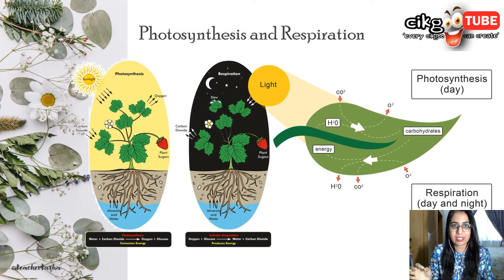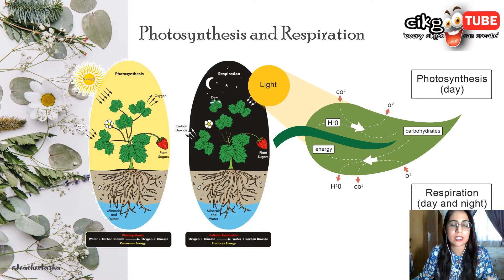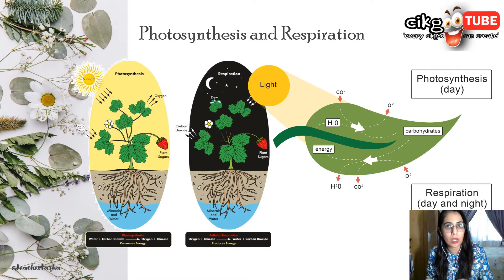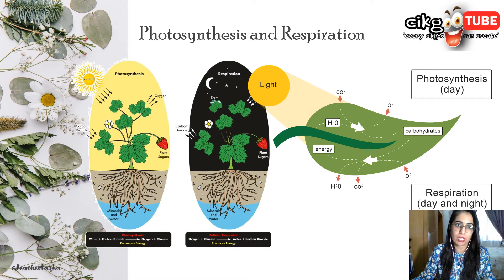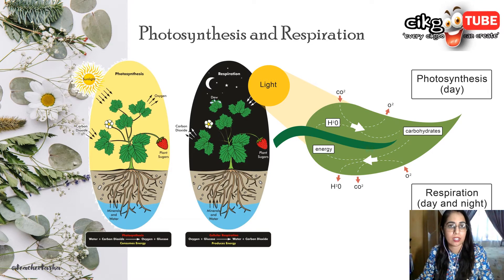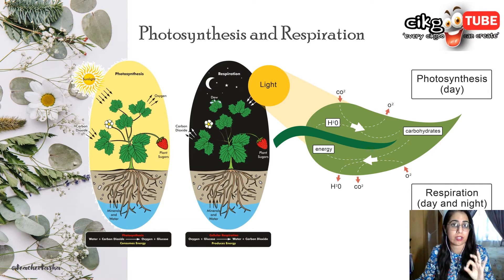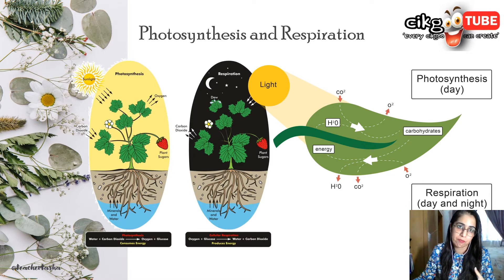Respiration and photosynthesis are interdependent. Photosynthesis produces raw materials required by respiration, and respiration produces materials required by photosynthesis. At night, photosynthesis does not take place — only respiration takes place, so carbon dioxide is released into the atmosphere. But at low light intensity, the rate of photosynthesis is actually equal to the rate of respiration, so gas exchange between the atmosphere and the leaf does not take place.